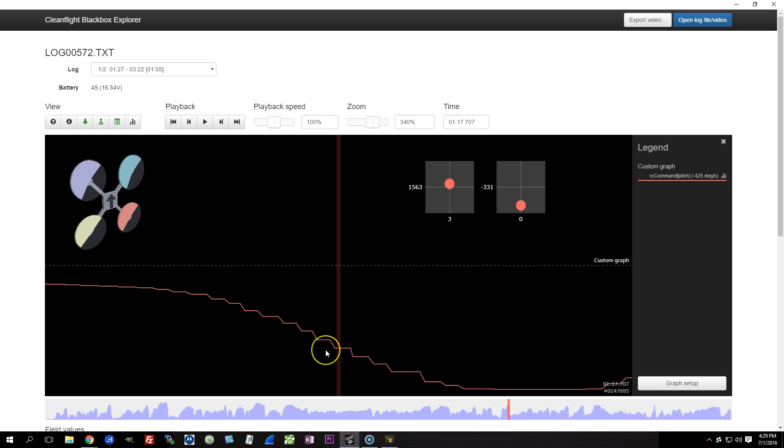Because in these moments, the D term actually, the kick pushes the copter into the move more aggressively. And that's why D term from error causes sharper stick response, but rougher motors. And D term from measurement causes softer stick response, but smoother motors.